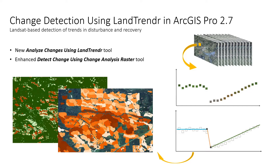The algorithm takes time series imagery as input, performs temporal segmentation using a band or a spectral index, and builds an analysis model which we call the change analysis raster, where each fitted segment is a change with a start date, an ending date, a duration, and a change magnitude.